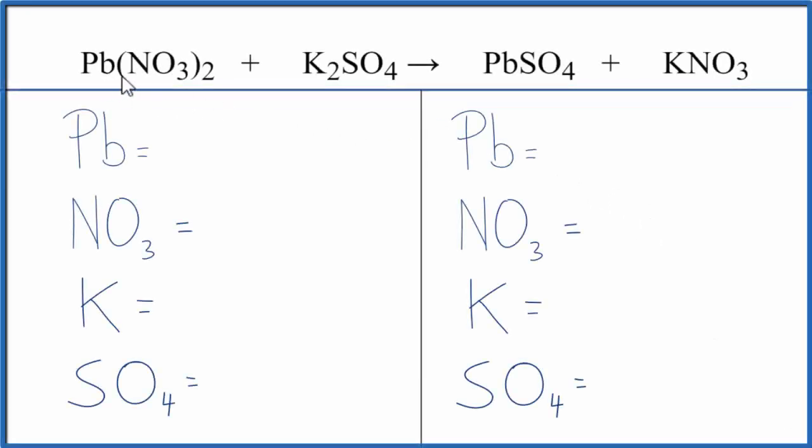In this video, we'll balance the equation for Pb(NO3)2 plus K2SO4. That's lead two nitrate plus potassium sulfate.